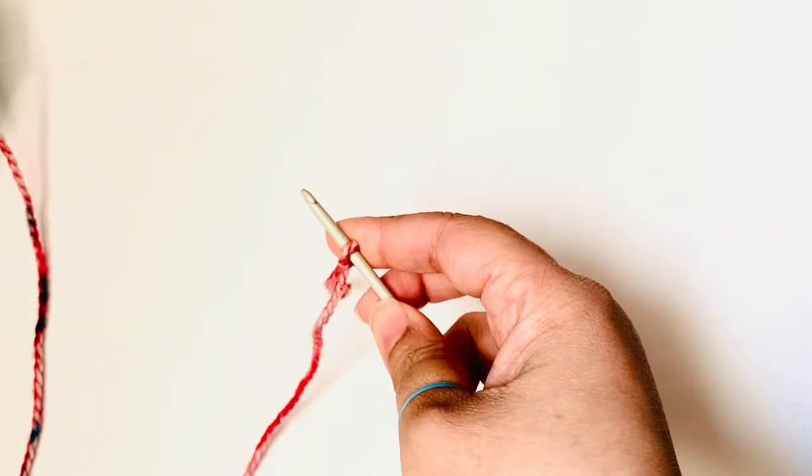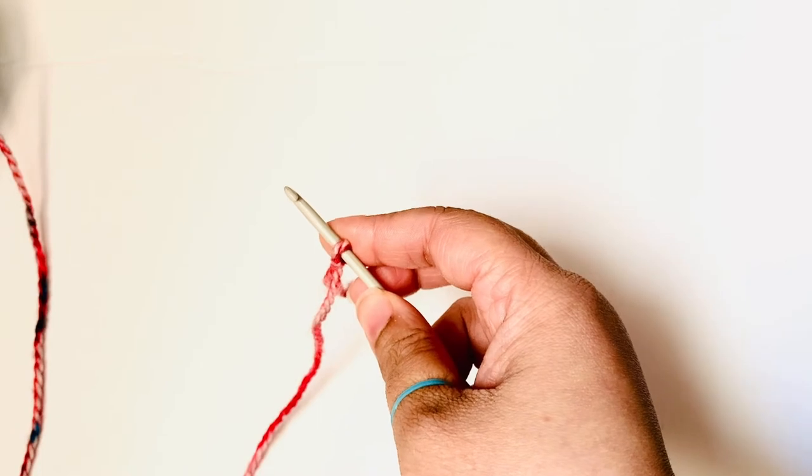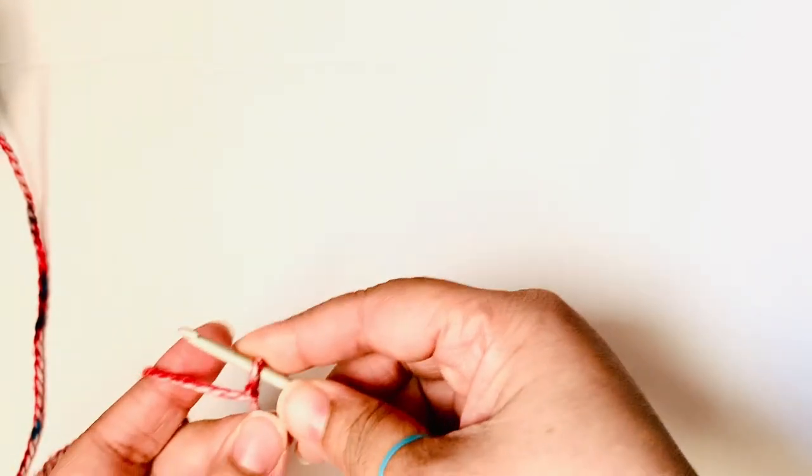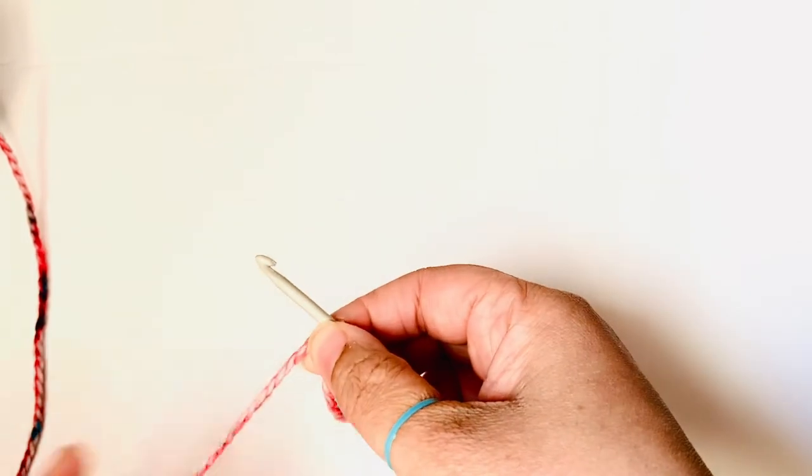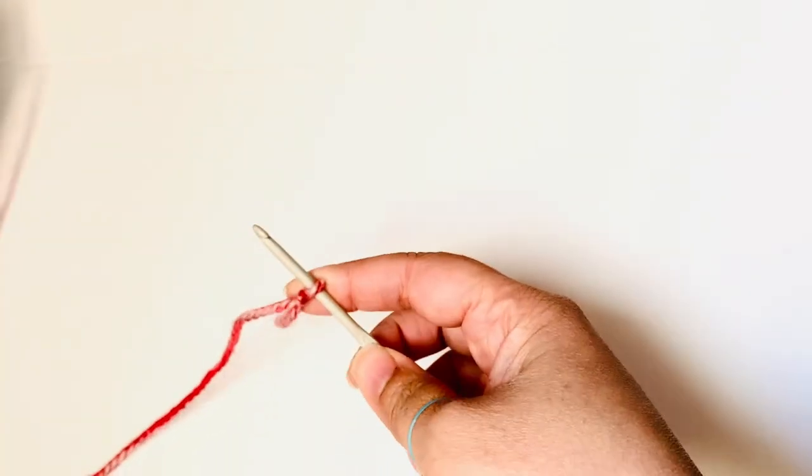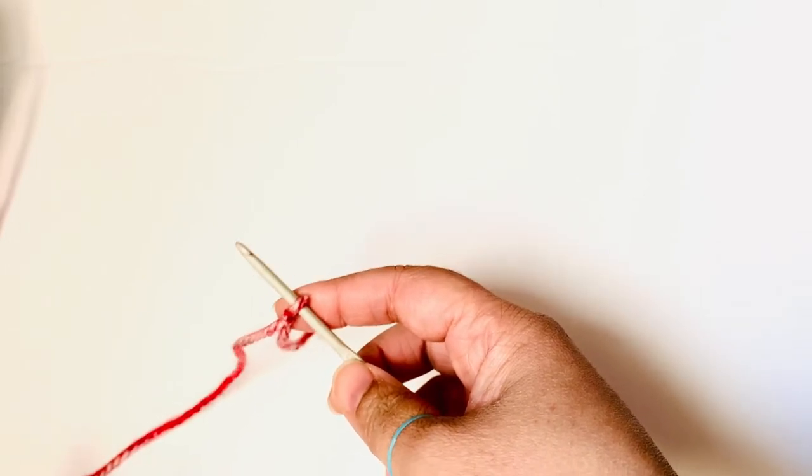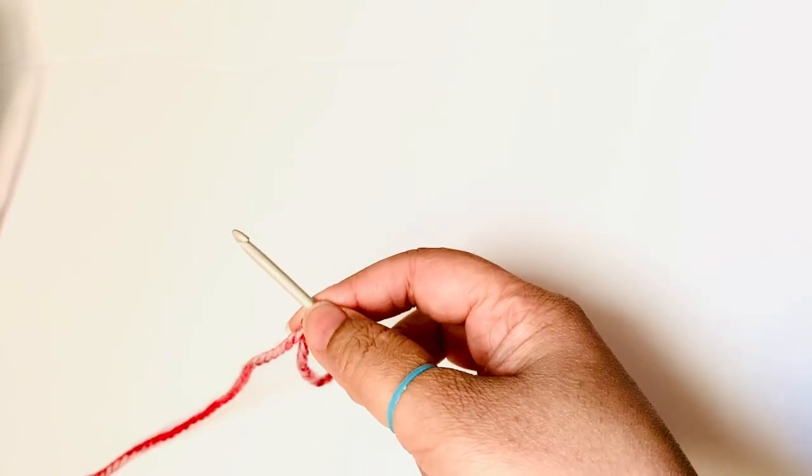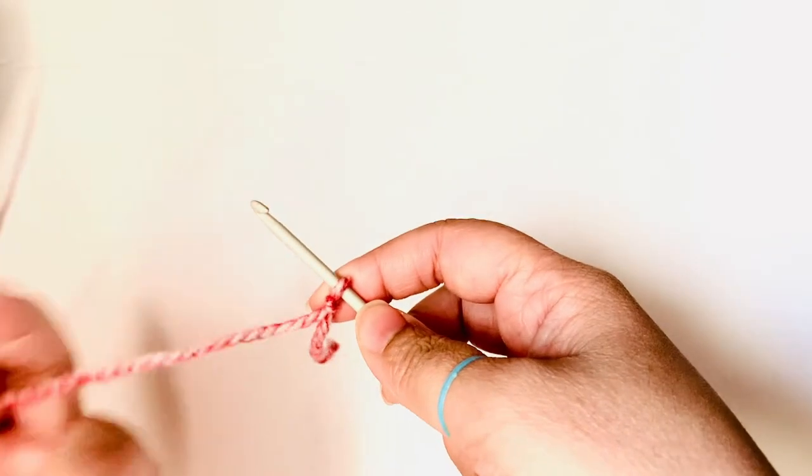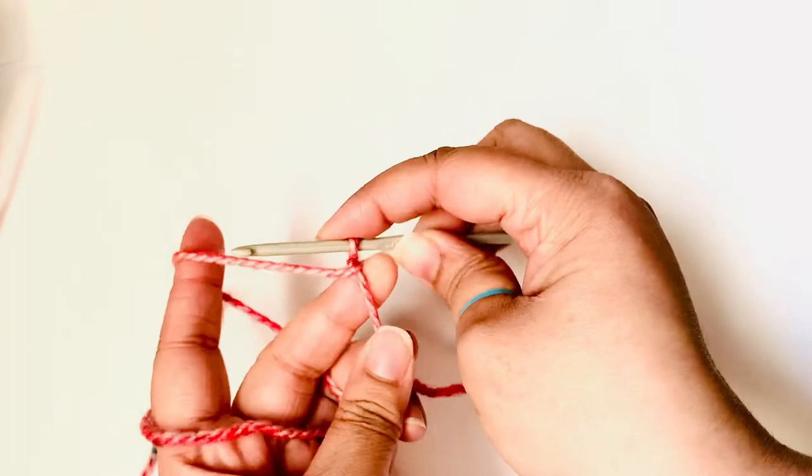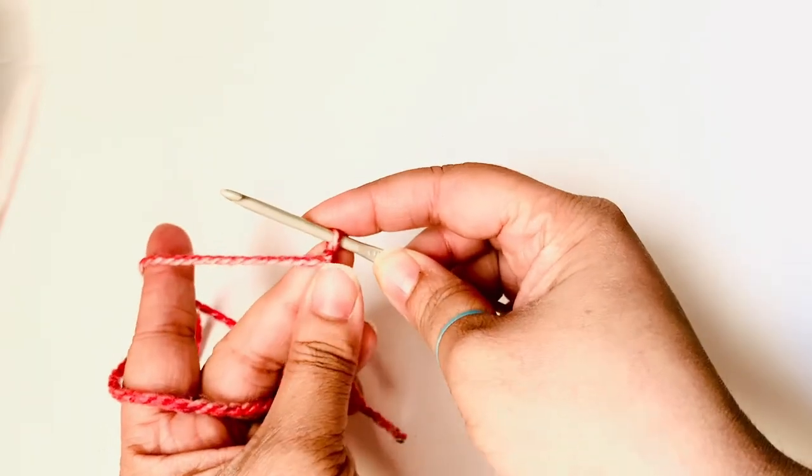So here is my slip knot, and the next basic thing that we need to do is to make a chain. So although there are other ways we can start on a project, the most basic is a chain, and I will teach you the other ways in a future video.